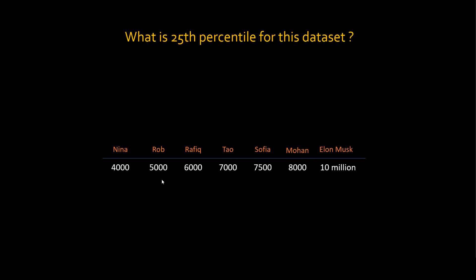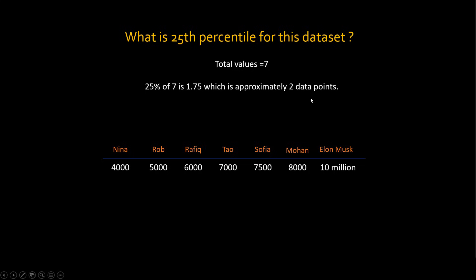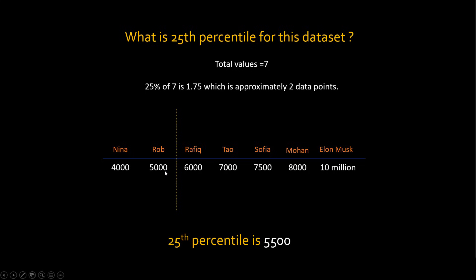What is the 25th percentile? Total values are 7. 25% of 7 values is 1.75, which is approximately 2. Which means draw a line after 2 data points. Here's the line. So this particular point is my 25th percentile, which is 5,500. Just to clarify, there are different ways of calculating percentile — I just showed you one. Another approach gives you the 5,000 data point, a third approach gives 6,000. So percentile could be 5,500, 5,000, or 6,000 — either the lower value, the higher value, or a value in between.